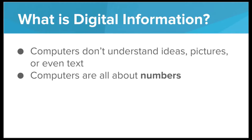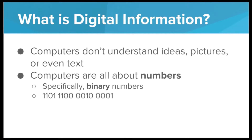So computers are all about numbers. But specifically, computers are about binary numbers. Binary numbers are numbers that only use the digits 0 and 1. We'll be diving deeper into exactly how it's possible to represent a number with only zeros and ones later. But for now, just know that this is how computers store numbers at the very base level — using only zeros and ones.